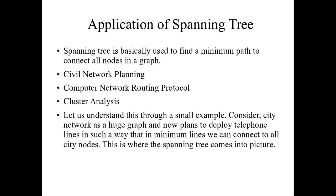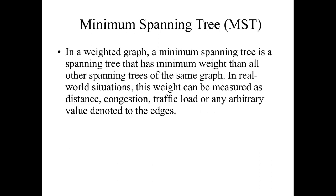In a minimum cost spanning tree, the connections have some weight or cost. This cost may represent anything like distance, congestion, traffic, or transmission speed of data. For example, if you want to connect telephone lines between nodes A and B, and there is no traffic on that route, then A to B and B to C is a good connection — that minimum spanning tree is good.